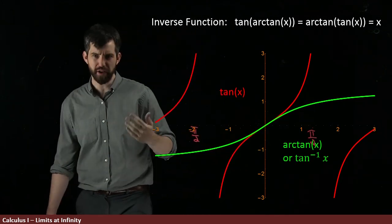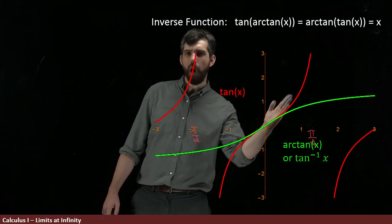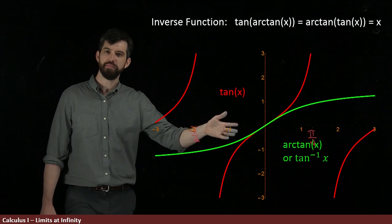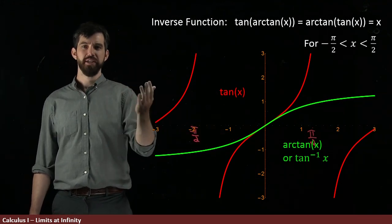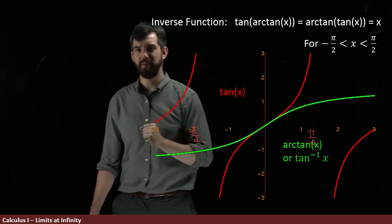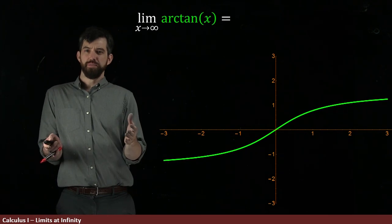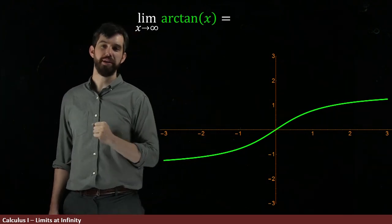That this only works for what we call this one branch of tangent. In truth, tangent is this periodic function. Here's a little bit of another branch. Here's a little bit of another branch. But there's sort of this one major branch between minus pi over 2 and pi over 2. And arctangent is defined to be the inverse just for that branch. So this formula only works in the particular domain minus pi over 2 up to pi over 2. For the purposes just of computing what the limit was, all I need is this graph. So that's all I've left behind here.